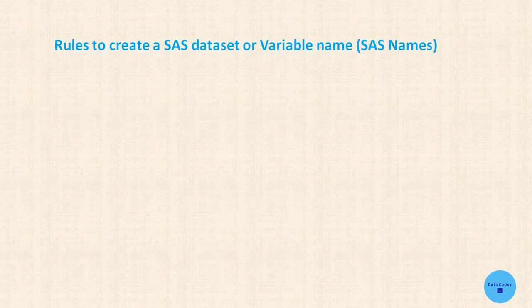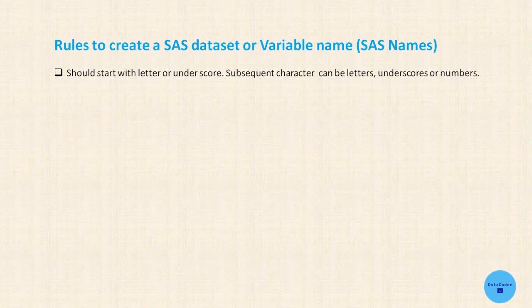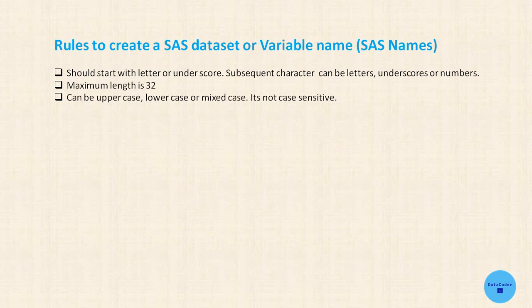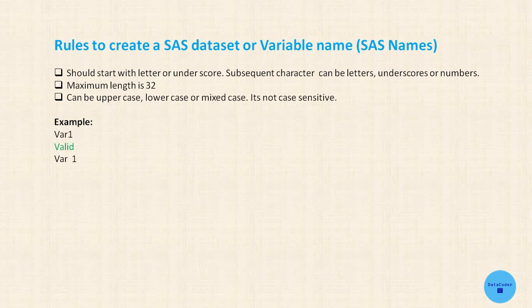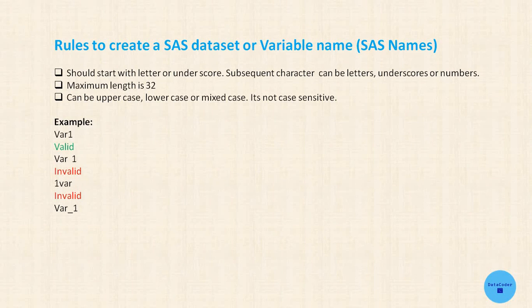Next are the rules to create SAS data set or variable names. SAS names should start with a letter or underscore. Subsequent characters can be letters, underscores, or numbers. Maximum length is 32 characters and names can be uppercase, lowercase, or mixed case — they are not case sensitive. For example: 'Var1' is a valid name. 'Var 1' (with a space) is invalid because spaces are not allowed. '1var' is invalid because it starts with a number. 'Var_1' is a valid SAS name. 'Var@1' is invalid because it contains a special character. '_var' is a valid SAS name.